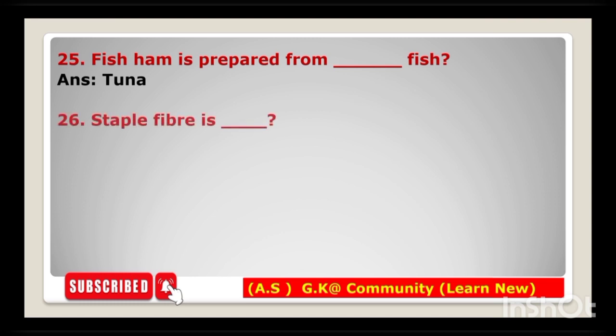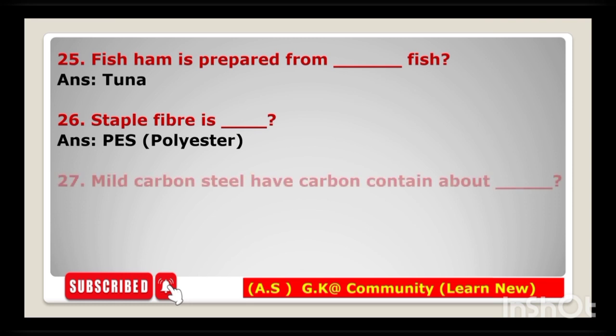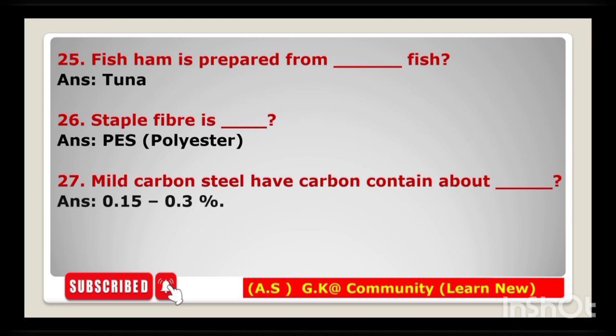Next: staple fiber is PES — polyester. Next question: mild carbon steel has a carbon content of about 0.15 to 0.3 percent.